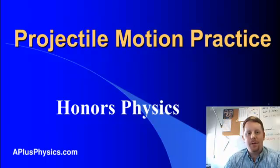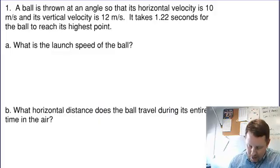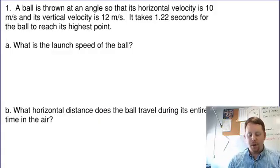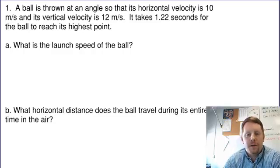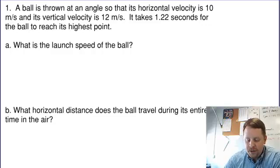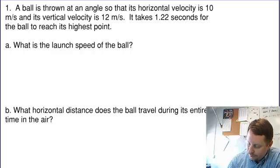Hi folks. Let's take some time to go over a couple more angled projectile problems. We'll take the case of a ball that is thrown at an angle so that its horizontal velocity is 10 meters per second and its vertical velocity is 12 meters per second. It takes 1.22 seconds for the ball to reach its highest point. What is the launch speed of the ball?